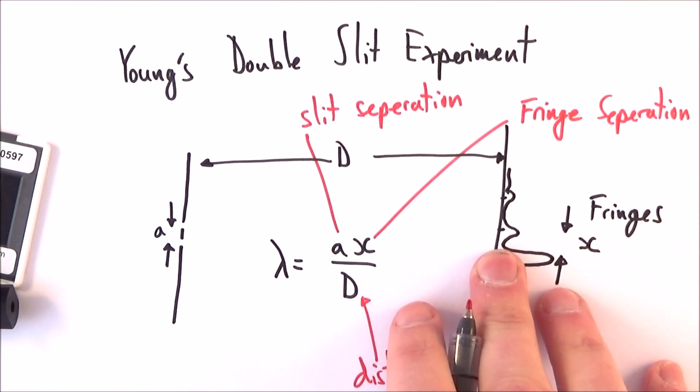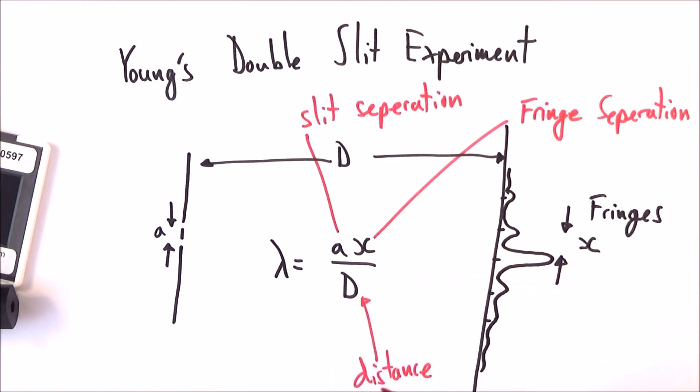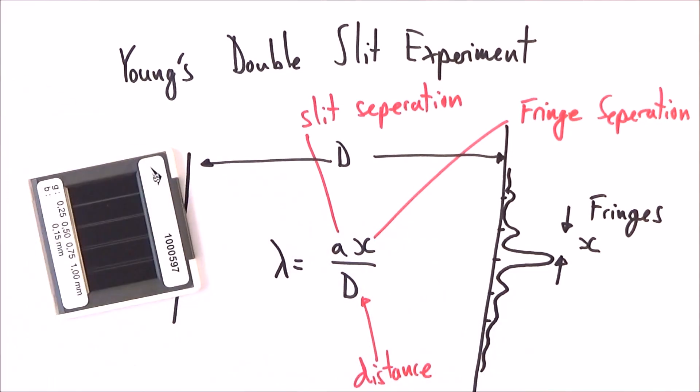So what we need then is some of these distances here, and by doing that you can measure the wavelength of light. If you know the separation of the slit, how far it is to the screen, and the slit separation, then you can work out the wavelength of the light that you're shining through.